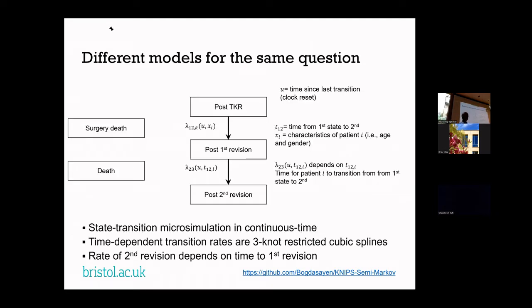The model actually looks simpler written this way: a post-total-knee-replacement state, a post-first-revision state, a post-second-revision state, and two types of death. Because we're in continuous time, we don't have to categorize time since initial surgery — we can fit a general spline model to revision rates. We use splines for time to first revision and time to second revision, where the second revision spline is adjusted by a covariate: the time from initial surgery to first revision.